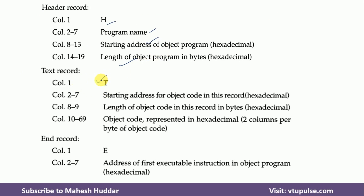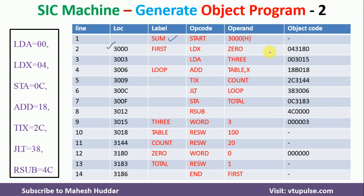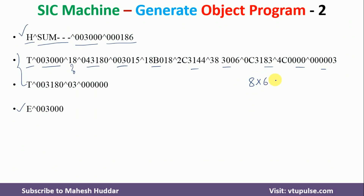The text record has 69 columns: column 1 is T, columns 2–7 are the starting address, columns 8–9 are the length, and columns 10–69 (60 columns) are the object codes, allowing a maximum of 10 object codes per record. In the first text record, I have written T followed by the starting address, and 8 object codes. Eight object codes require 48 columns — since 1 object code = 6 columns and 2 columns = 1 byte — meaning 24 bytes, which is 0x18 in hexadecimal.